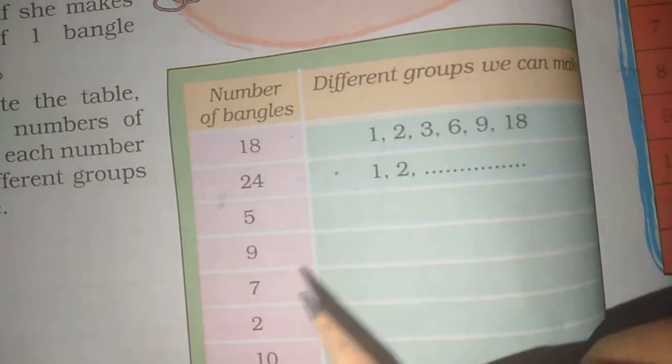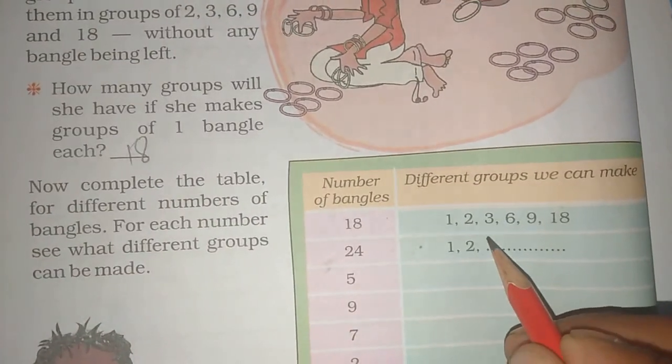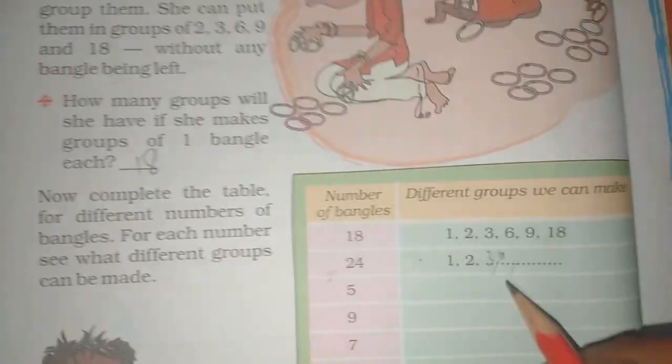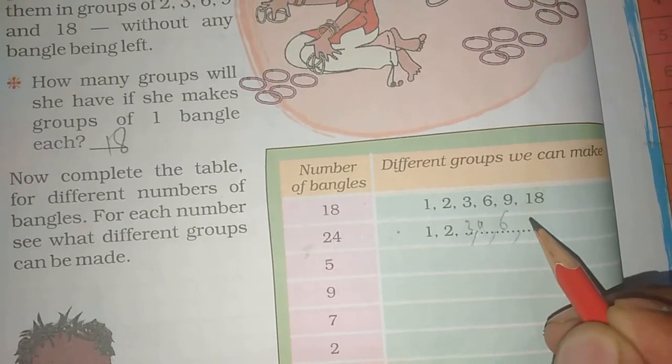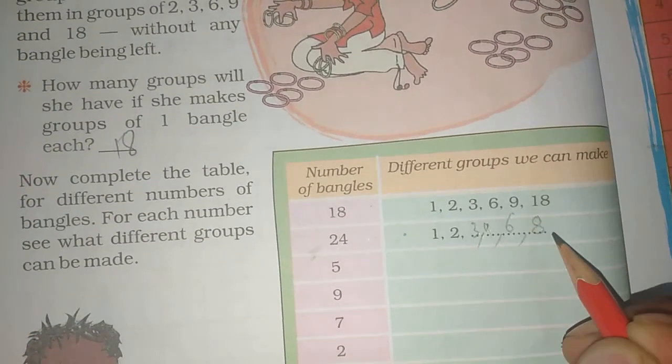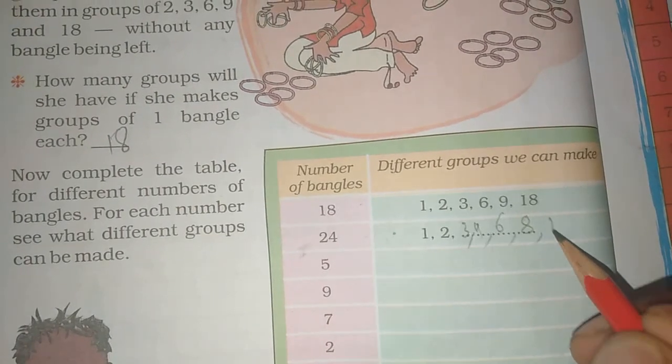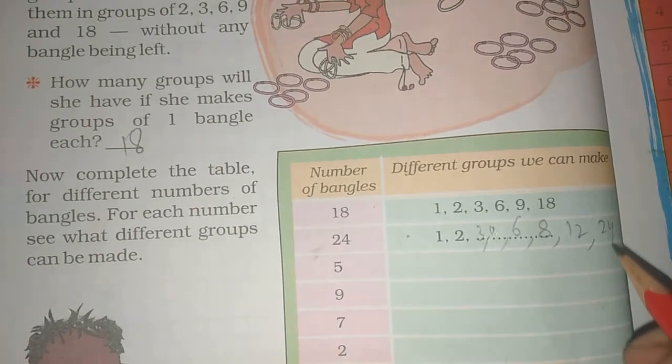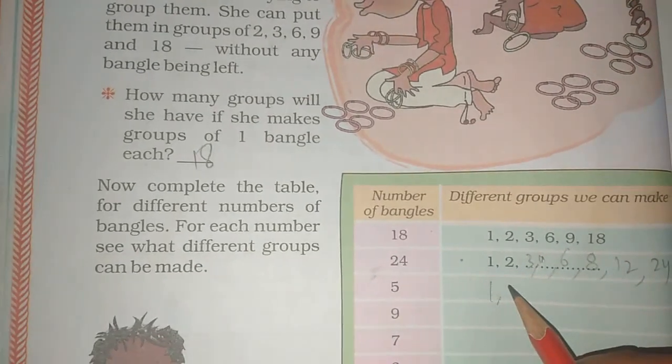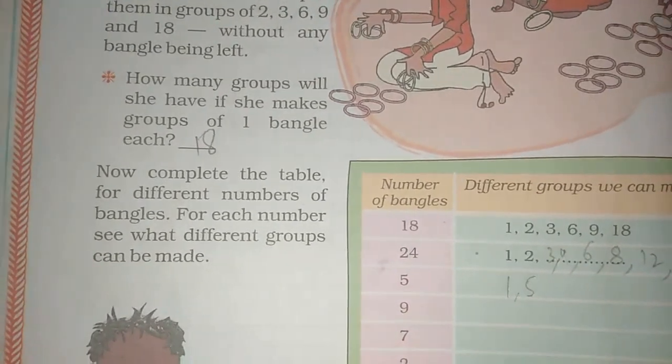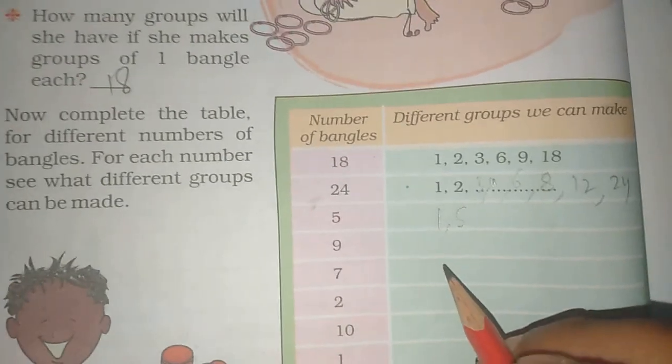How many groups can be made? 18: 1, 2, 3, 6, 9, 18. 24: 1, 2, 3... Five: 1, 5. Eight: 1, 2, 4, 8.